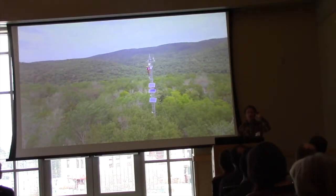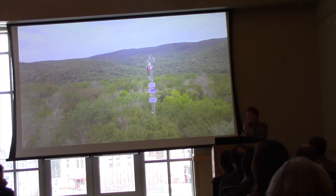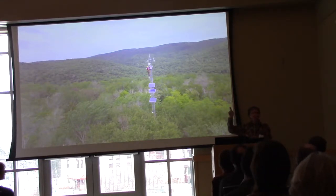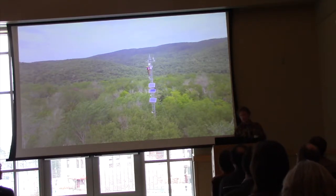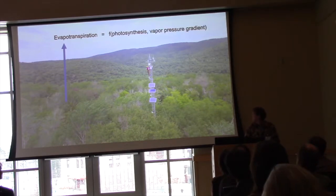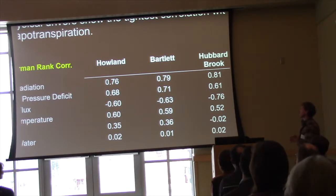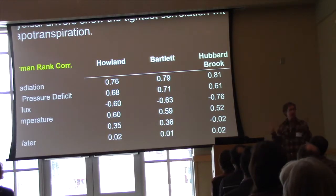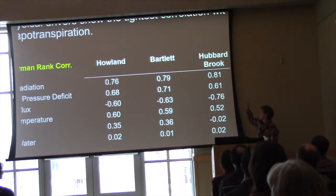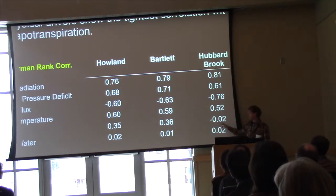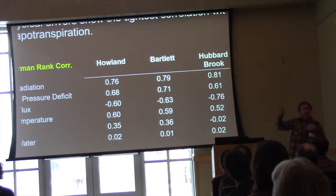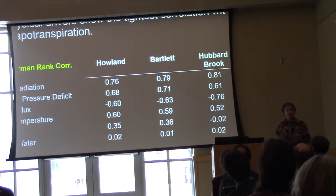Keeping in mind the stomate, I'm going to use variables that control photosynthesis — is the stomate open? — and what is the vapor pressure gradient outside of that stomate, i.e., how much atmospheric demand is there for water? Looking at the correlation between evapotranspiration and net radiation, vapor pressure deficit, CO2 flux, air temperature, wind speed, and soil moisture at the three sites: I list them in that order because that's roughly the ranked importance that emerges from these flux towers. Net radiation is the strongest driver of evapotranspiration. Soil moisture or water availability matters hardly at all.